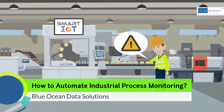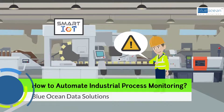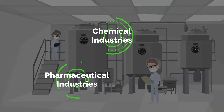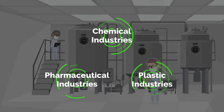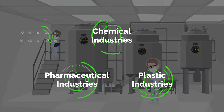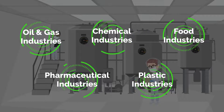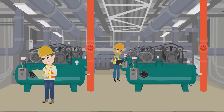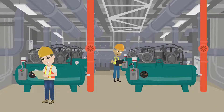How to Automate Industrial Process Monitoring. In a typical manufacturing company such as chemical industries, pharmaceutical industries, plastic industries, oil and gas, food industries, etc., process monitoring is extremely important to ensure machines are running at optimum condition and produce quality products as per customer requirements.